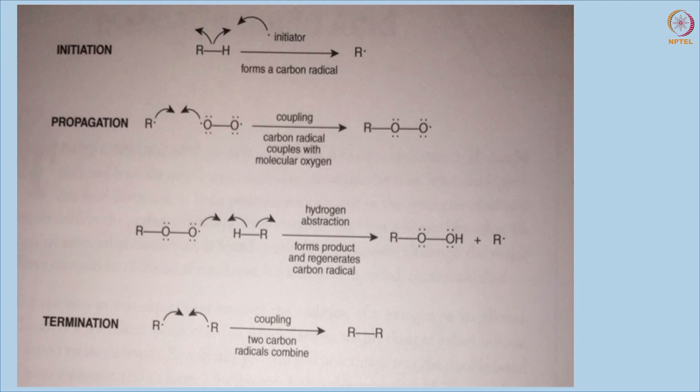Oxidation starts with initiation — a product releases a free radical. This free radical couples with oxygen and propagates the reaction, which continues until it is terminated by another free radical. Here, antioxidants come in and bind, terminating the reaction. Whatever free radicals have been produced, if they are allowed to bind with the antioxidant, we can immediately stop the reaction. That is why antioxidants are very important.